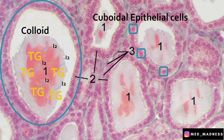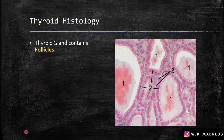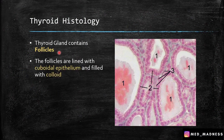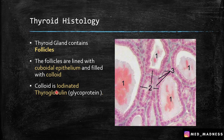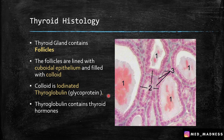So what is the take-home point? The thyroid gland contains follicles. These follicles are lined by cuboidal epithelial cells and filled with colloid. The colloid is iodinated thyroglobulin. Note that thyroglobulin is a glycoprotein secreted by the cuboidal epithelial cells, and the thyroglobulin contains the thyroid hormones.